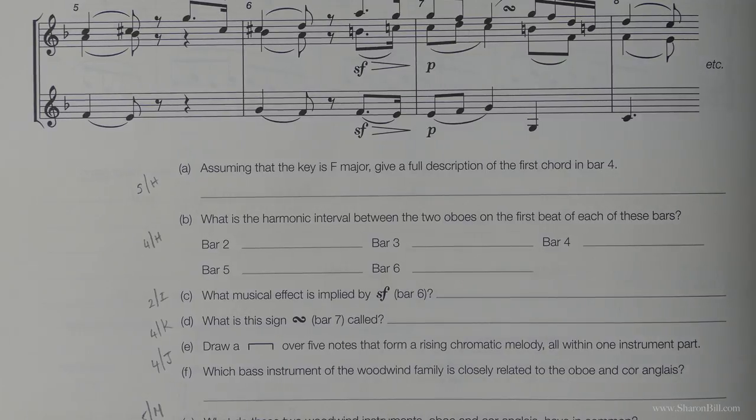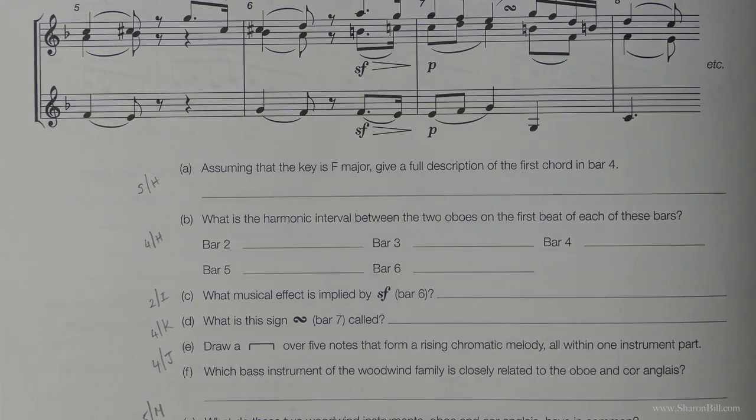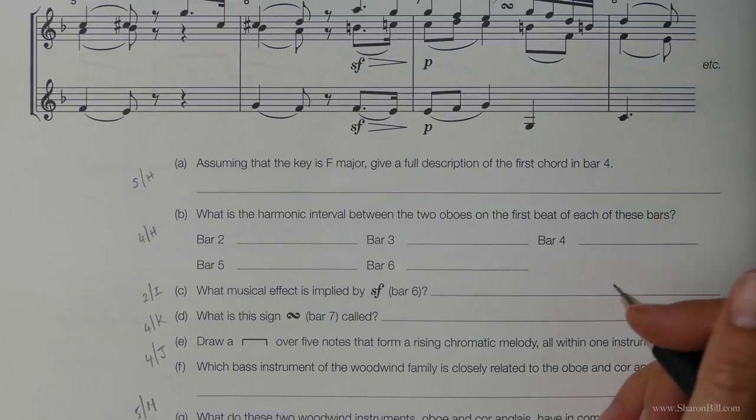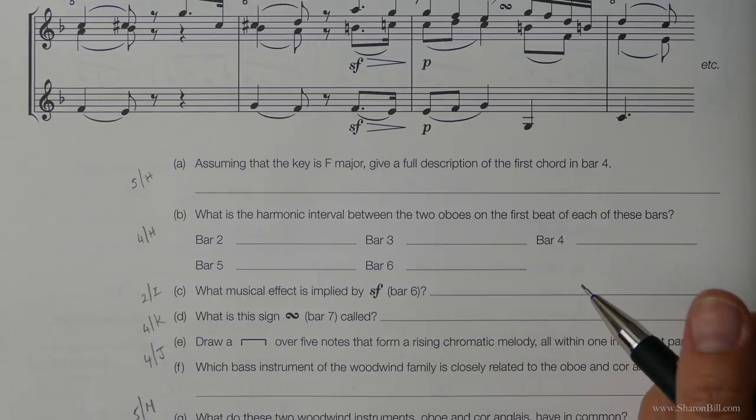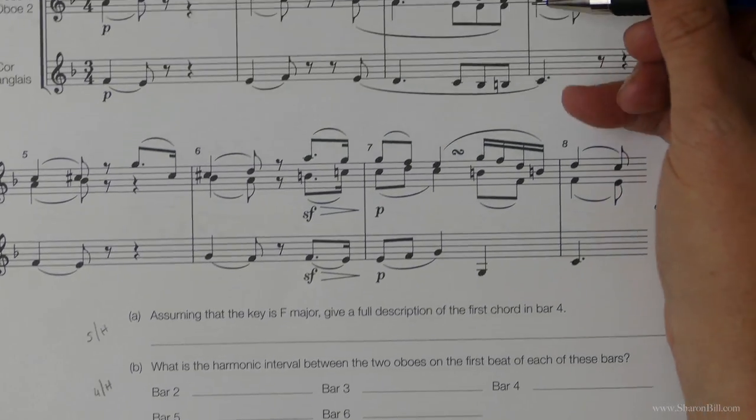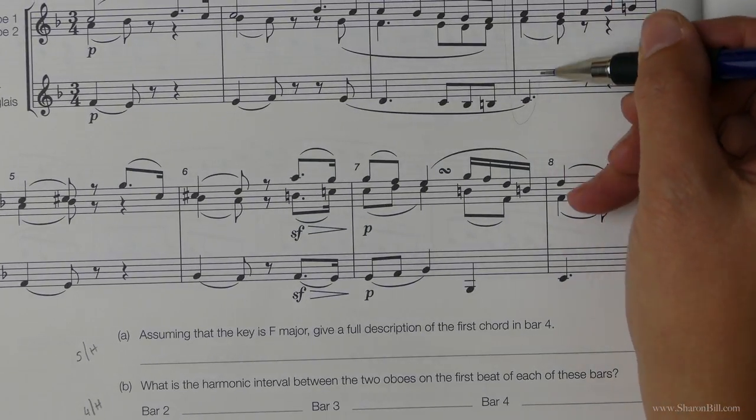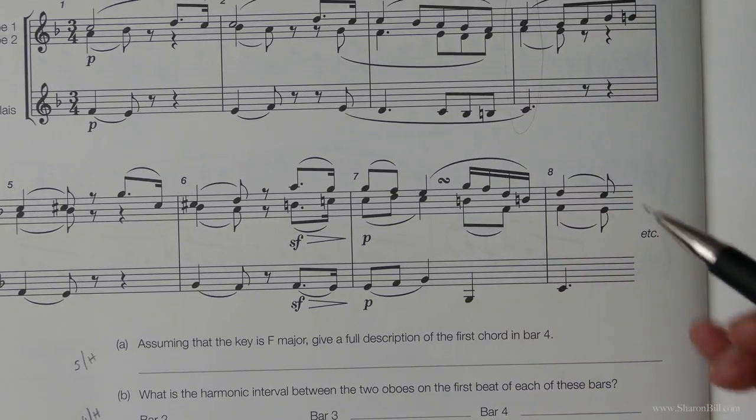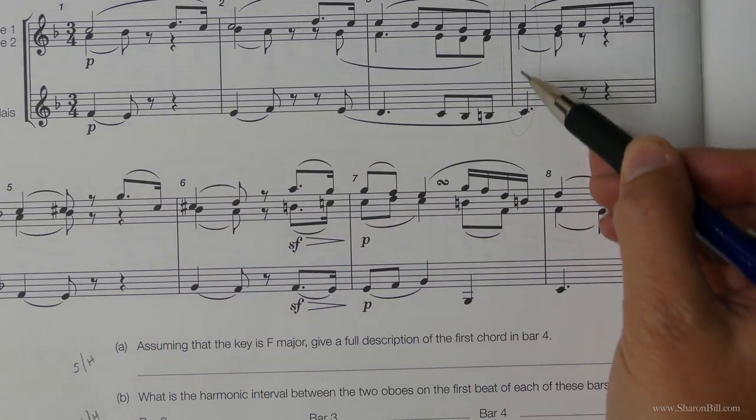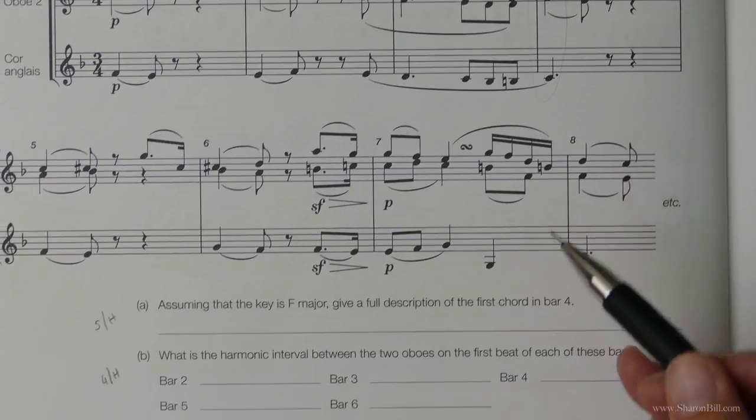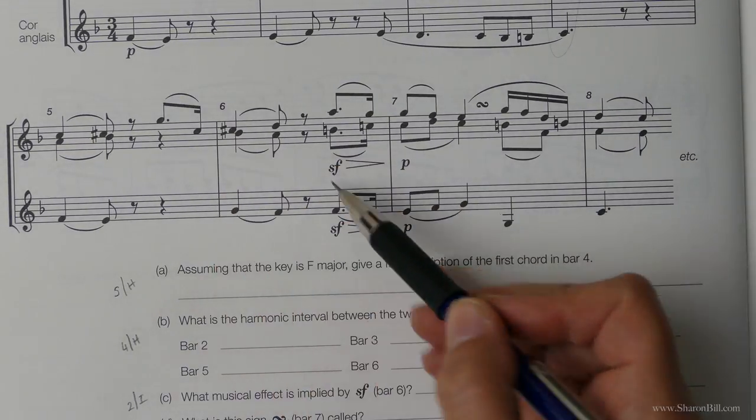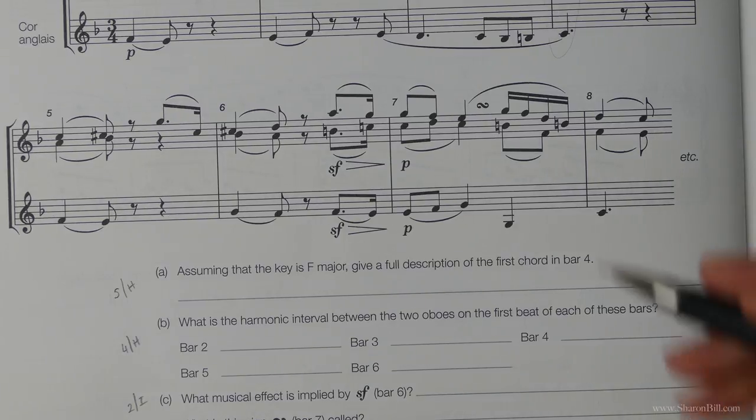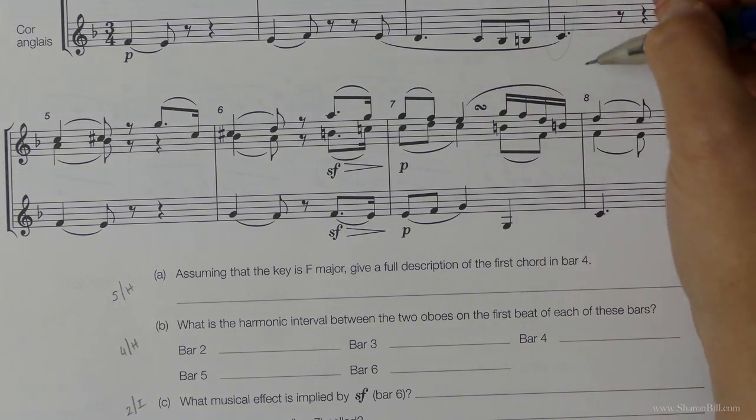So I'm hoping that you've had a go with this. And so we'll work through these answers together. Doesn't matter if you go wrong or you haven't quite got it. You'll learn by your mistakes. And so we're looking at the first chord in bar 4. So we're looking at this chord here. Remember we're reading both staves and treble clef. And it says assume that the key is F major. I guess that's going to change later on. However we can just safely assume we're in F major here.